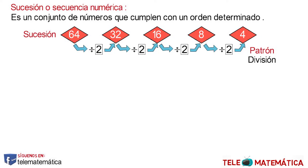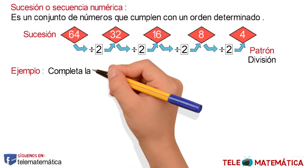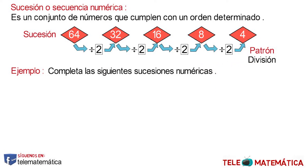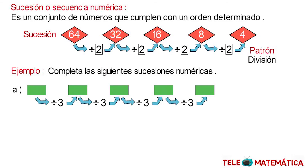Very good. Next, we will work through some examples. Complete the following numerical successions. Literal A: we have a succession where the division pattern is the number 3, and the sequence begins with the number 81.